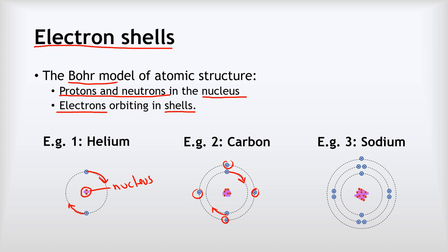An even more complicated example is sodium. Sodium has three shells: still a nucleus in the middle, two electrons on the inside shell, eight electrons on the next shell, and then a lone electron on a third outer shell. So what we mean by shells is that the electrons orbit the nucleus at different set distances away from it.